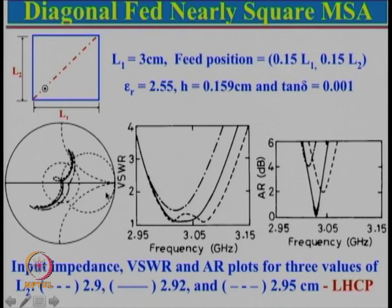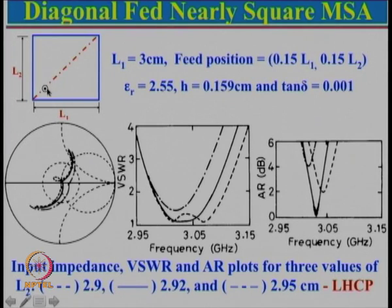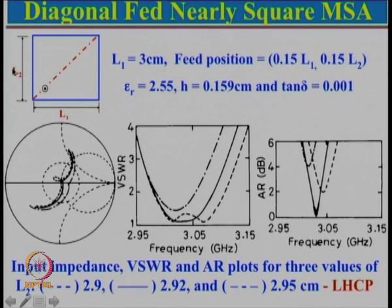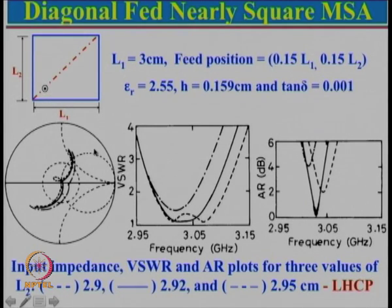The loop in the impedance curve gives a larger VSWR less-than-2 bandwidth, but it is not useful because the polarization changes from horizontal to circular to vertical, so the pattern is not symmetrical. For this particular feed and L1/L2 configuration we get LHCP. Instead of feeding along this diagonal, if we feed along the other diagonal we will get right hand circular polarization. Also, if we take L2 larger than L1 — say close to 3.1 instead of 2.92 — we will get RHCP, so one must be careful about what kind of polarization will be obtained.